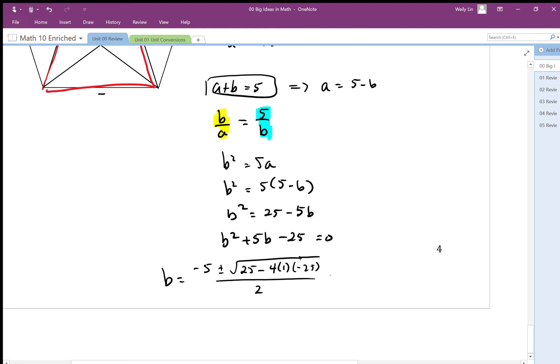We end up with this solution: negative 5 plus minus square root of 125, all over 2. Obviously it's not going to be minus, otherwise it would give us a negative number. We don't want that negative length.